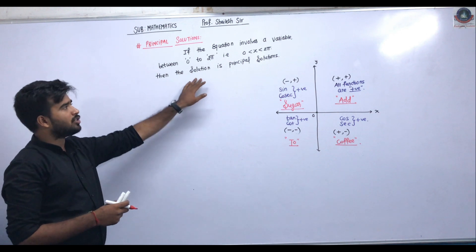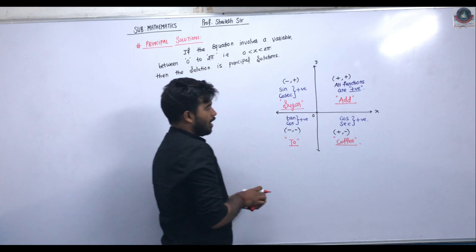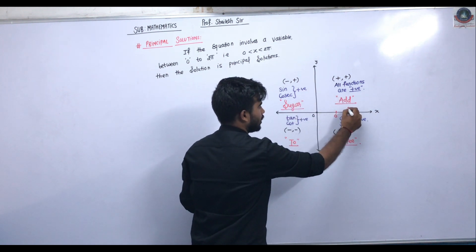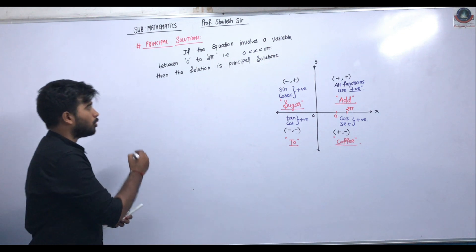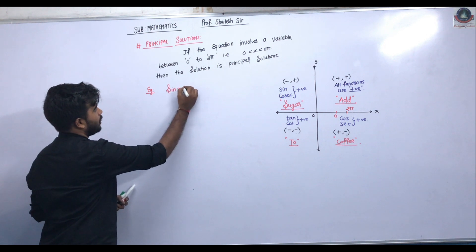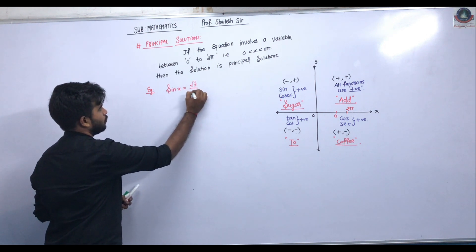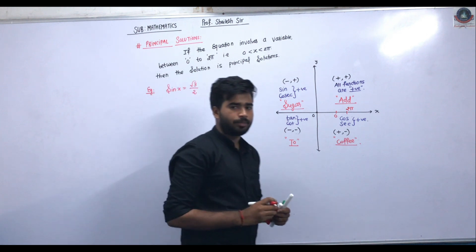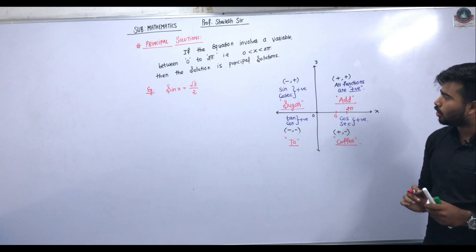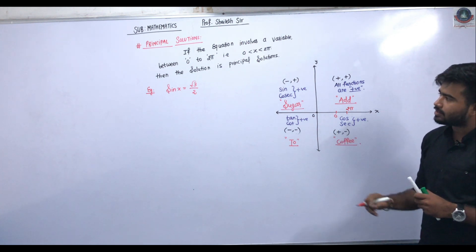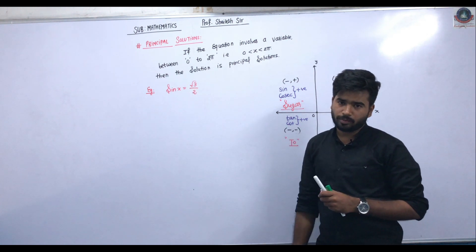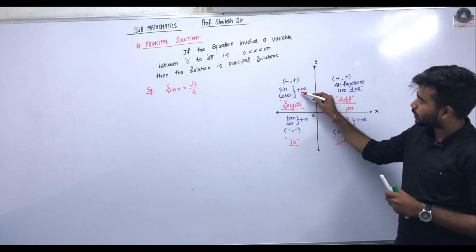In principal solutions, the range is 0 to 2π — 0 being the start and 2π being the complete rotation. Consider the example: sin x = √3/2. First we will see that sin is positive. So if sin x = +√3/2, we check the second quadrant as well.